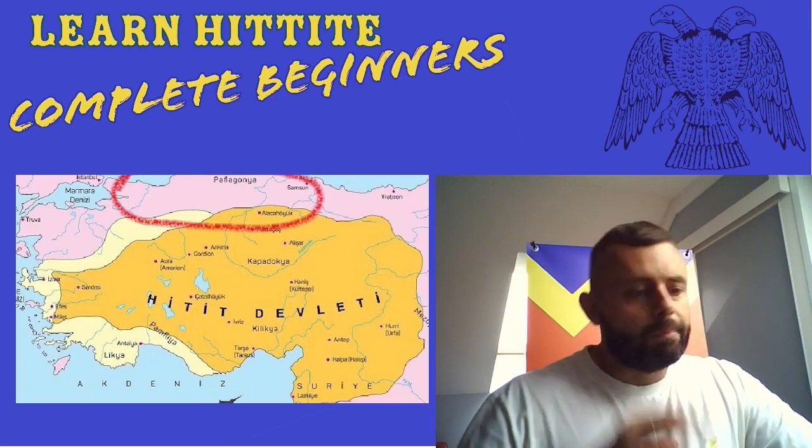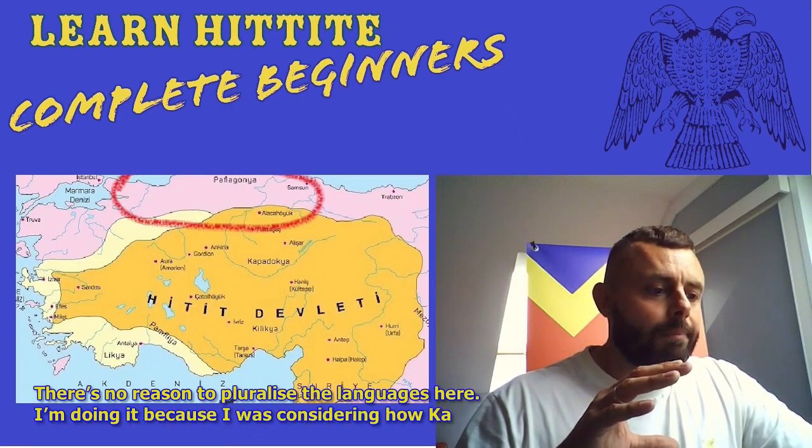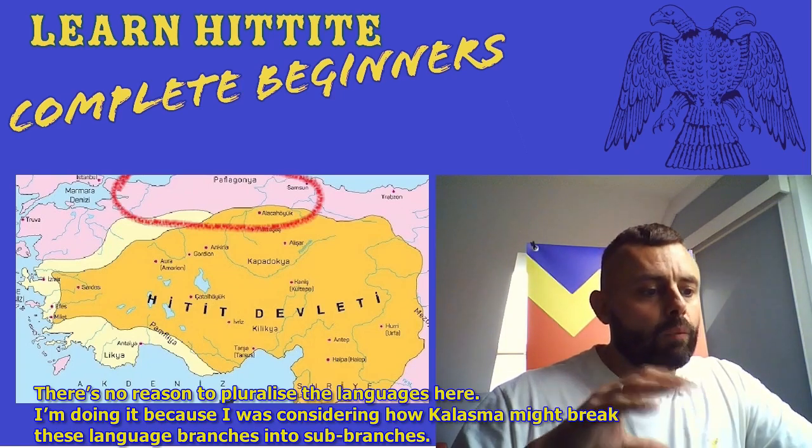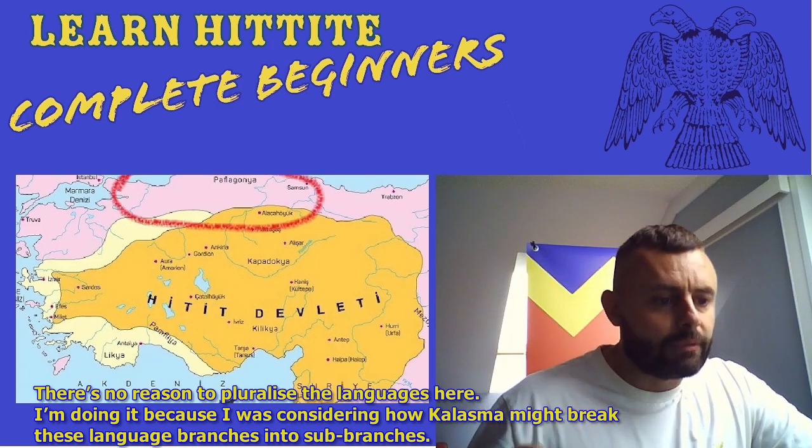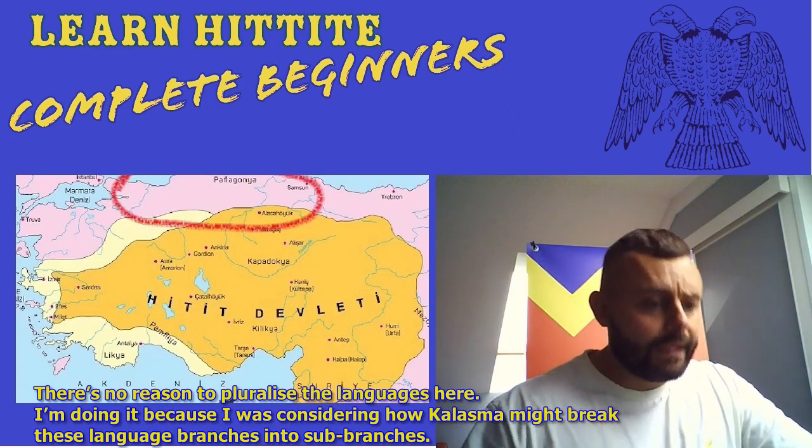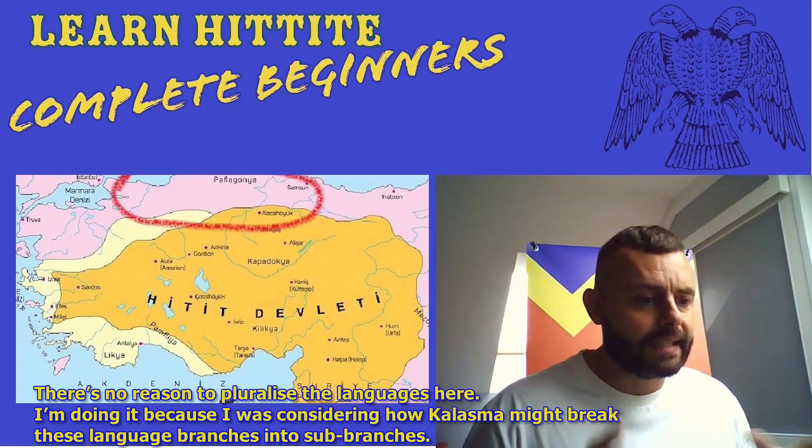This is the area where historically Palaic languages were spoken. Palaic languages are basically northern Anatolia, Luvian languages southern Anatolia, western Anatolia Lydian languages, and central Anatolia is Hittite.